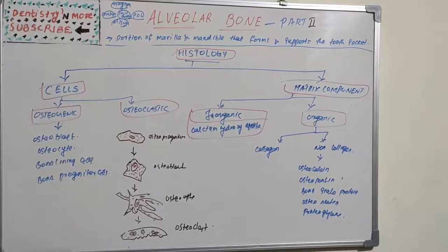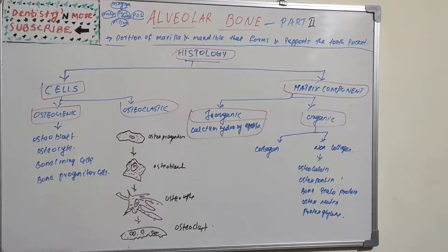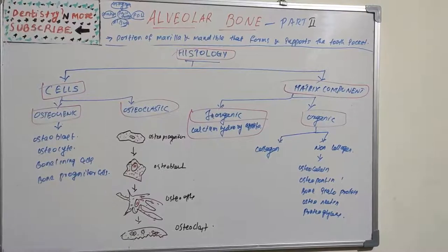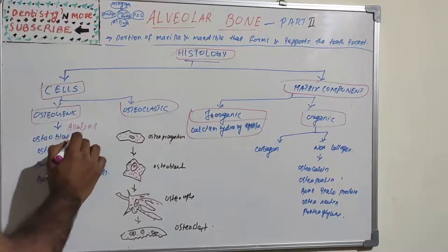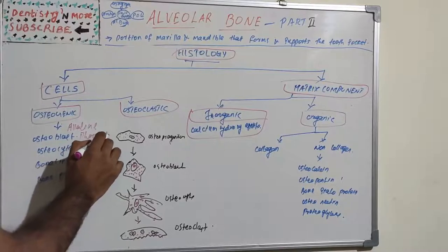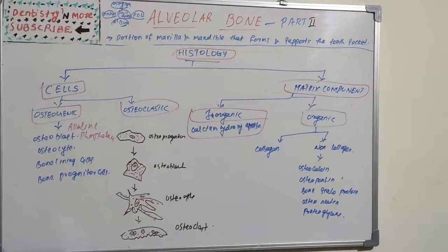Osteoblasts produce type one collagen and non-collagenous bone proteins like sialoprotein, osteopontin, and osteonectin, as well as growth factors. They also express and release alkaline phosphatase. Alkaline phosphatase is very important in bone formation, and alkaline phosphatase activity has been recognized as a reliable indicator of osteoblast function.